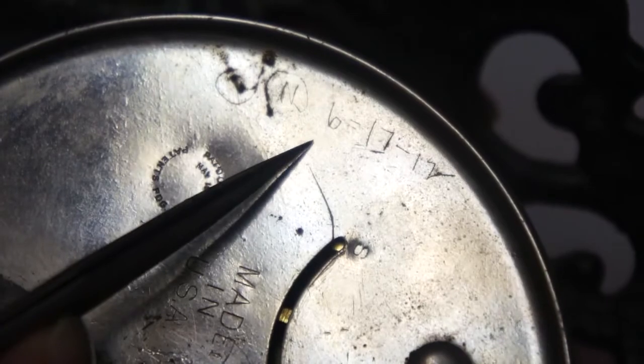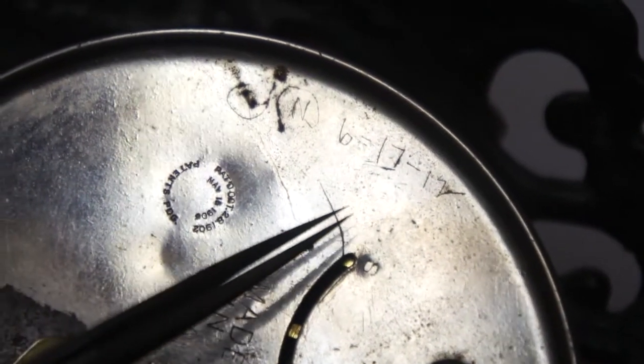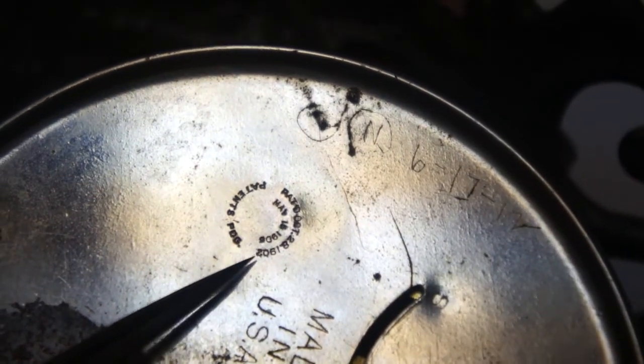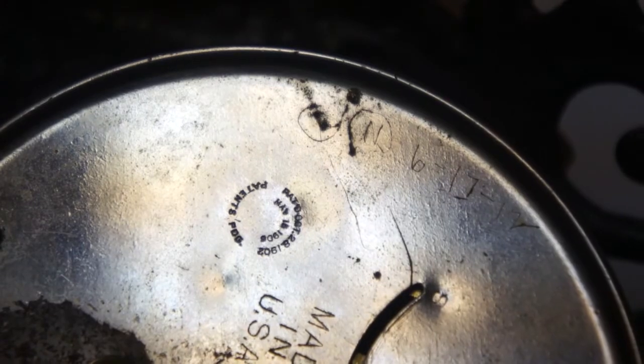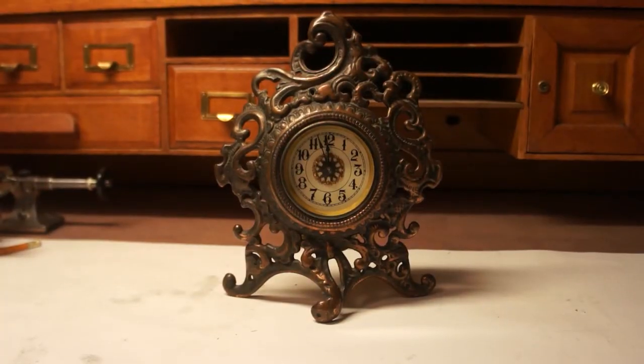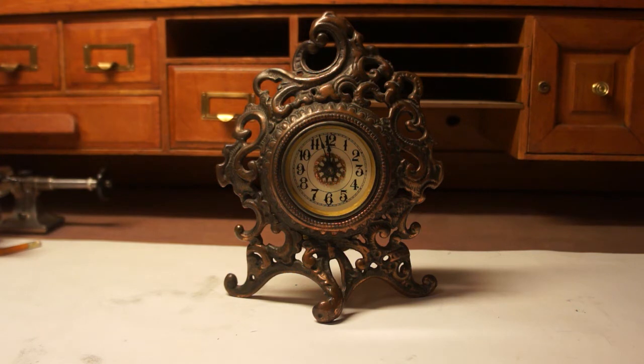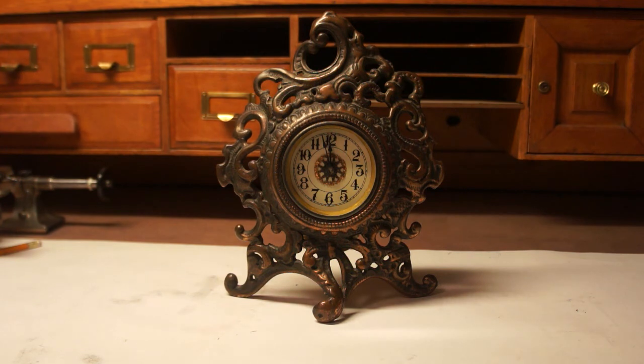As far as markings on the back of the clock, you can see here that somebody worked on it in 1912, and then here's the patent dates. A real nice example of an Art Nouveau style clock. These were popular between 1890 and 1910. They're made by the Western Manufacturing Company of La Salle, Illinois.